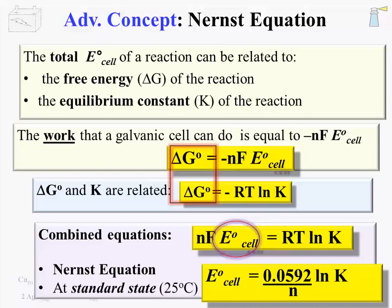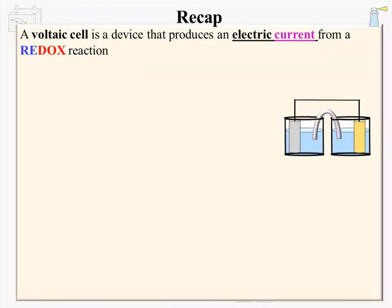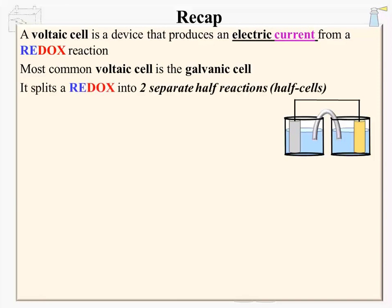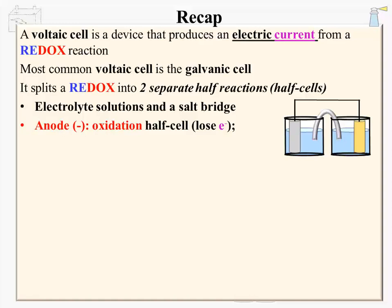And that completes the material of the lecture. As a recap: a voltaic cell is a device that produces an electrical current from a redox reaction. The most common type of voltaic cell is a galvanic cell. It physically splits a redox reaction into two separate half-reactions — since they are separated, they are called half-cells. The galvanic cell has electrolyte solutions surrounding the electrodes and a salt bridge that connects the half-cells so that ions can migrate and keep the charge balanced.